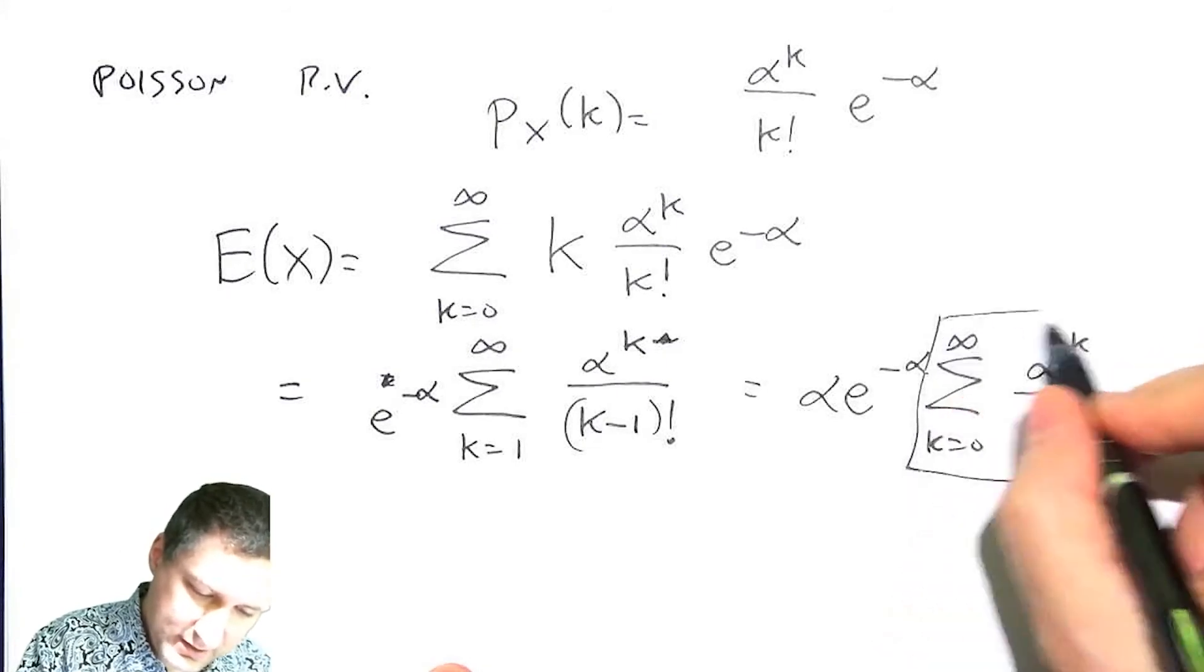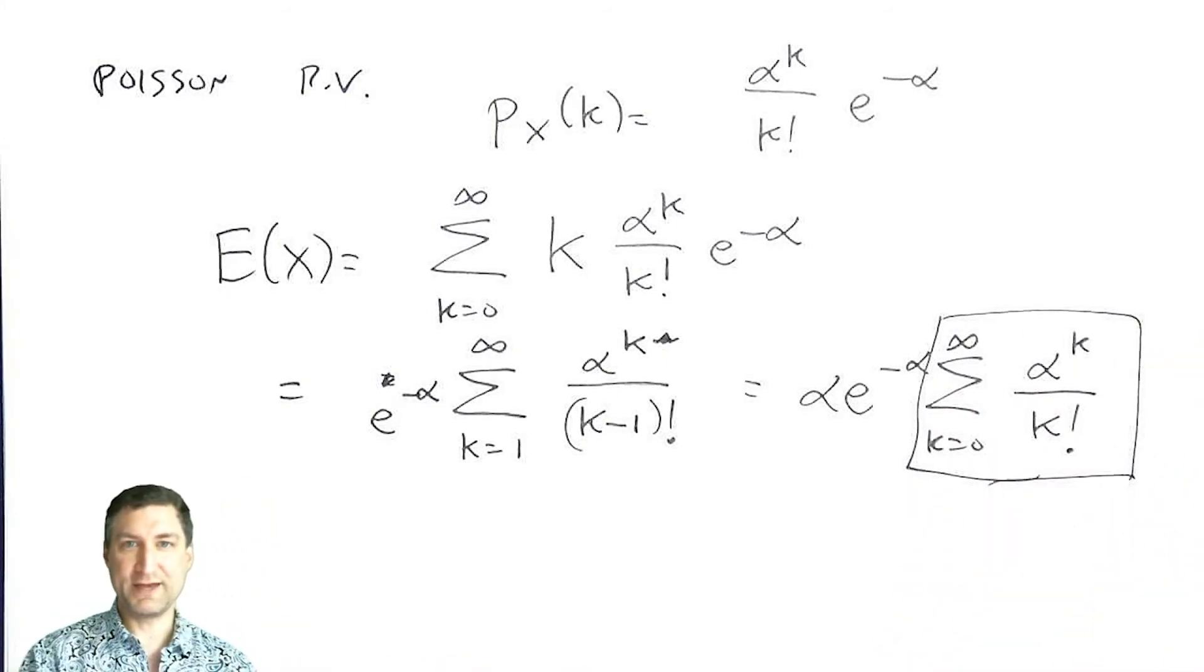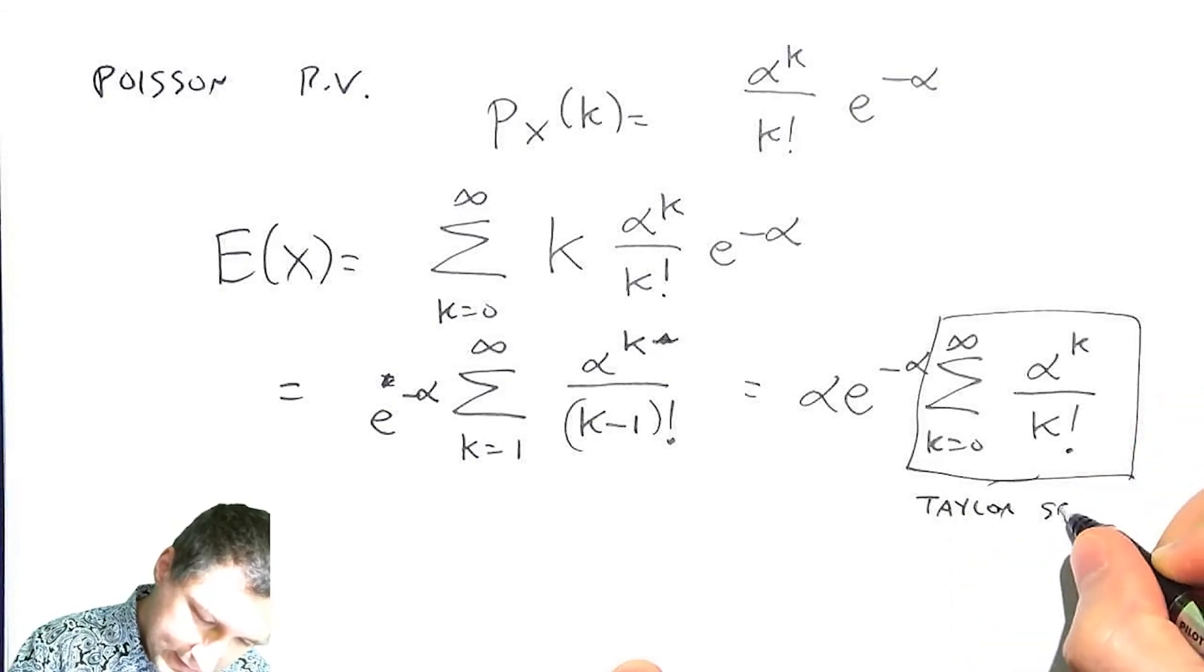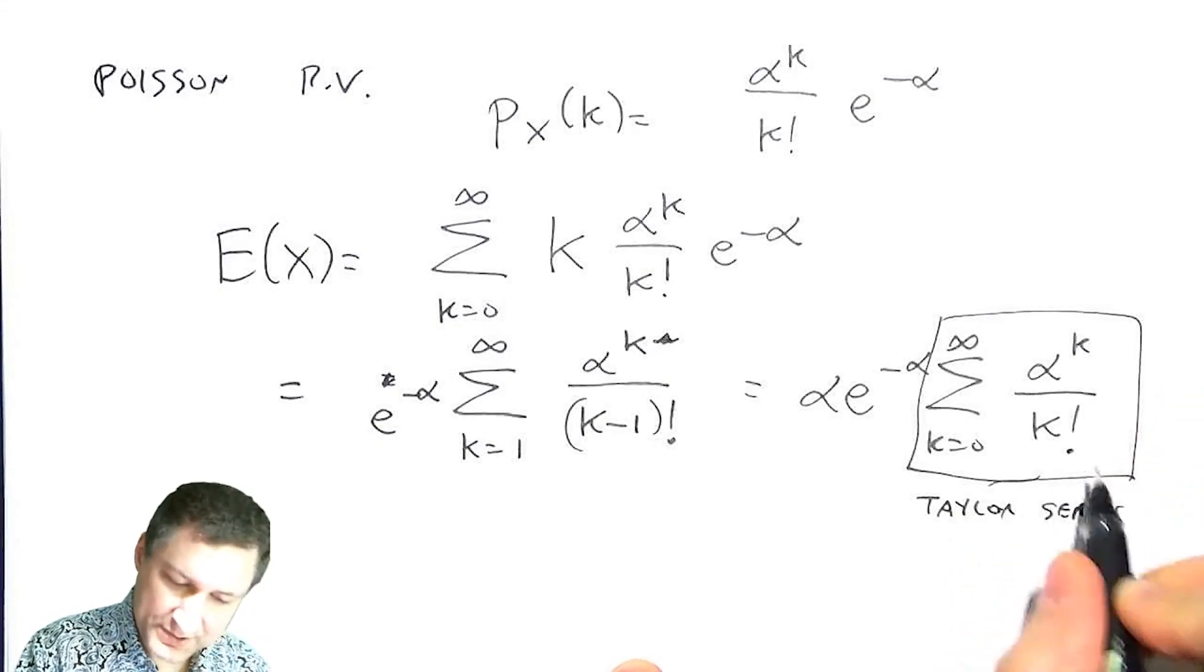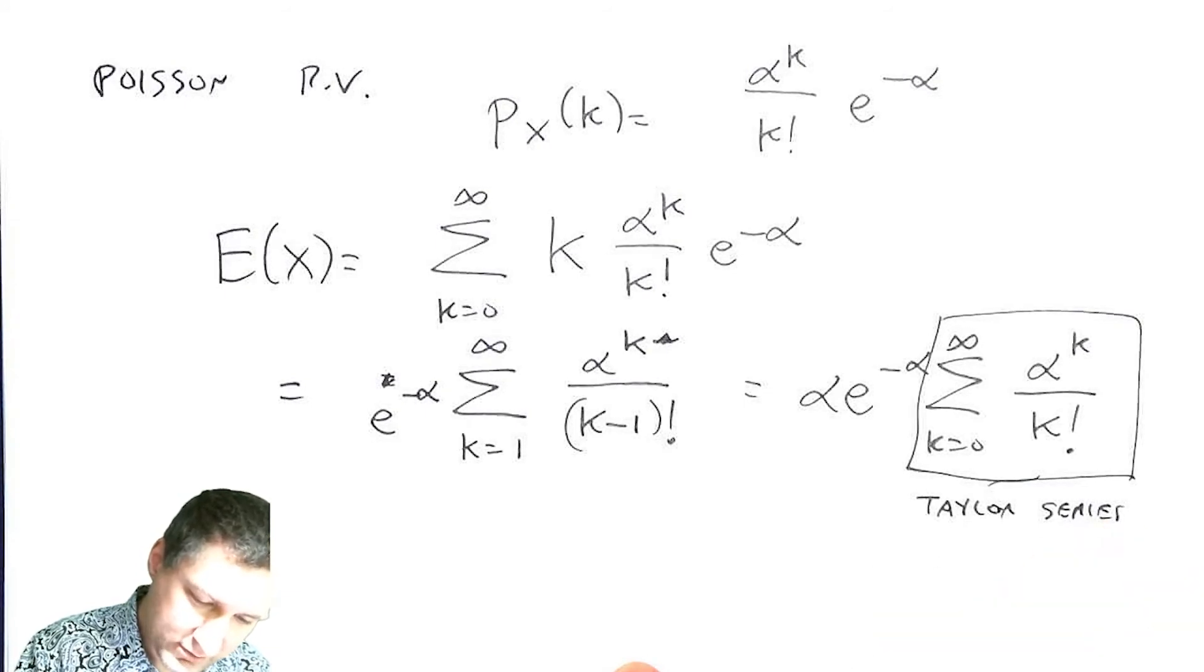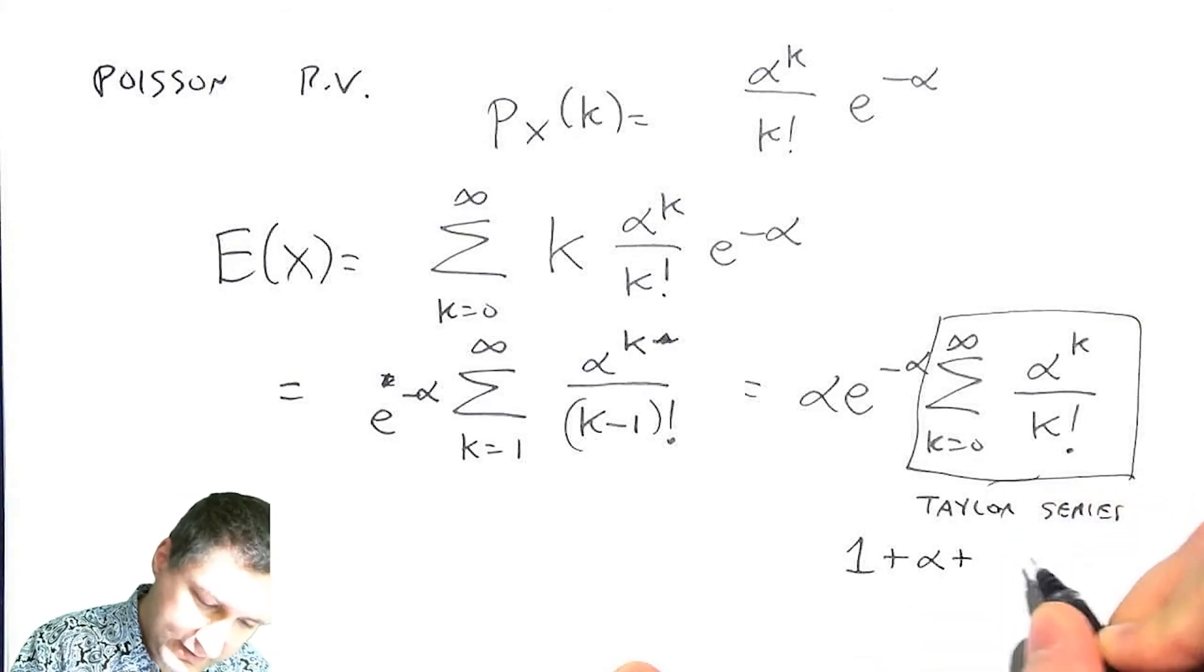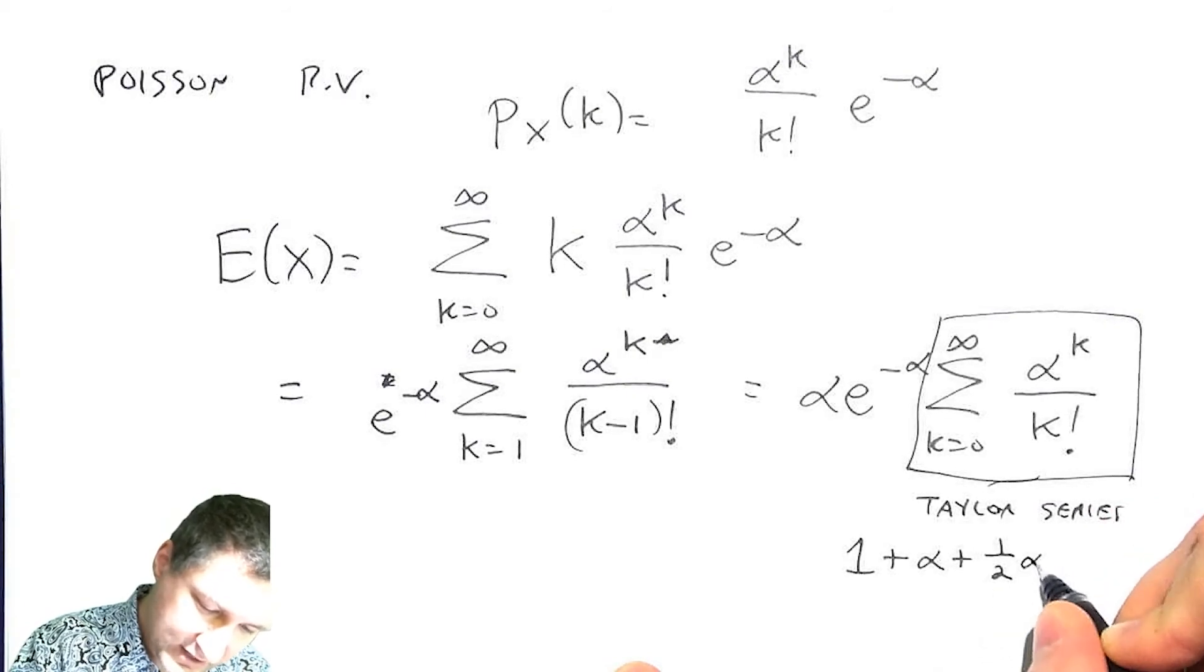Now, this thing here is something that maybe you remember from calculus. It's called the Taylor series. And if we write out what this means, this is like saying when k equals 0, I get 1. When k equals 1, I get alpha. Then I get 1 over 2 alpha squared, 1 over 3 factorial alpha cubed.